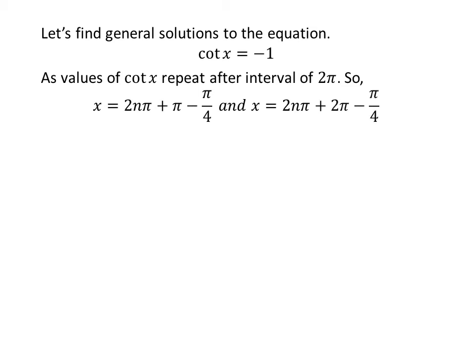Let us find the general solutions. Since the values of cotangent of x repeat after an interval of 2 times pi, the general solutions are 2 times n times pi plus pi minus pi upon 4, and 2 times n times pi plus 2 times pi minus pi upon 4, where n is an integer.